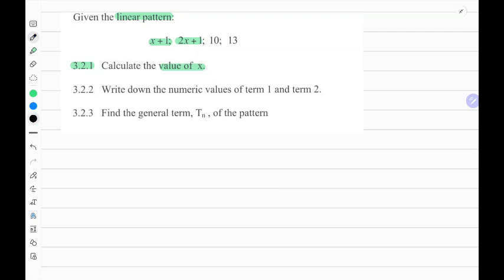So a good place to start would be to rewrite the given sequence. It is x plus 1, 2x plus 1, 10 and 13. And then what we can also do is we can label the different parts where tn represents the terms and n represents the position for each term. It's 1, 2, 3, 4.